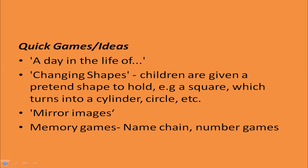In 'mirror images', we make pairs of children. One child becomes the mirror and the other child acts out or forms certain images by looking into the mirror. The mirror has to enact the same because they are like a mirror image. After some time, they swap roles and the second child does the different activities which the mirror now has to copy.